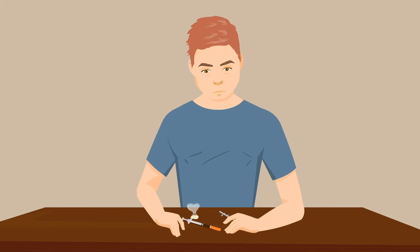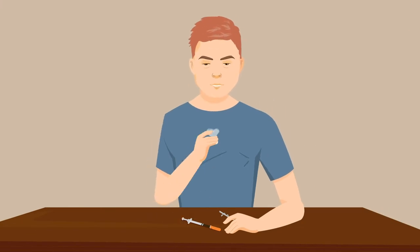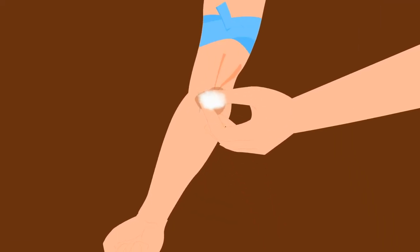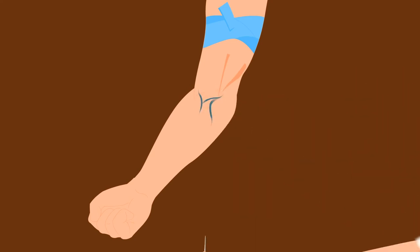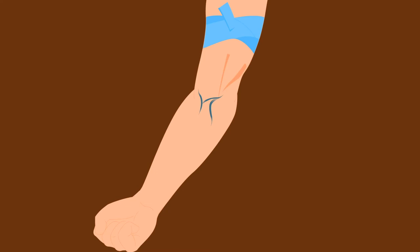Example 3: A person recently started using heroin. His use is becoming increasingly dangerous, although he is not yet dependent on opioids. However, he is experiencing cravings and losing control of his use, which is having negative consequences. He is feeling out of control.